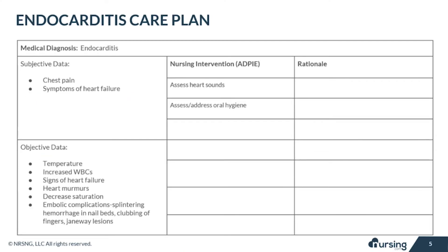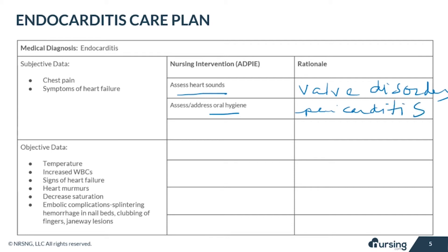Let's take a look at some nursing interventions necessary for endocarditis. Assess heart sounds, as patients with endocarditis may develop valve disorders — listen for heart murmurs or extra sounds. Next, assess and address oral hygiene. This is super important. There's a significant connection between oral health and endocarditis, as bacteria can actually travel from the mouth to the heart very easily. Patients should brush their teeth twice daily.